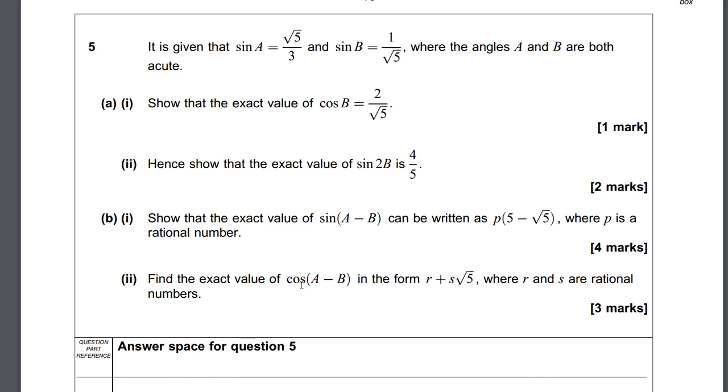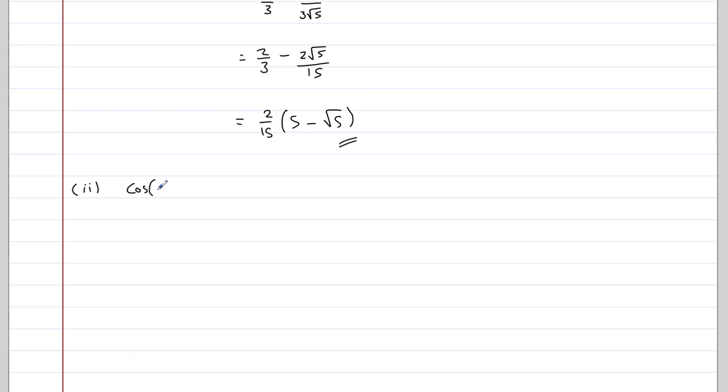In B part 2, it says find the exact value of cos A minus B in the form R plus S root 5. Cos A minus B is given by the formula cos A cos B plus sine A sine B. That's in the formula book.